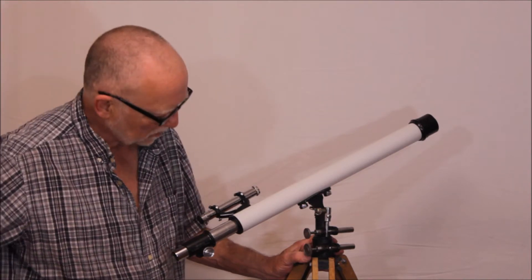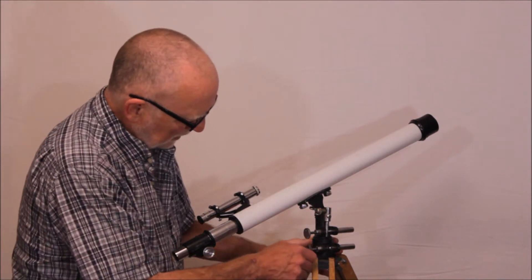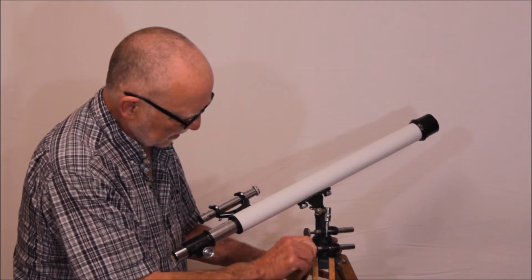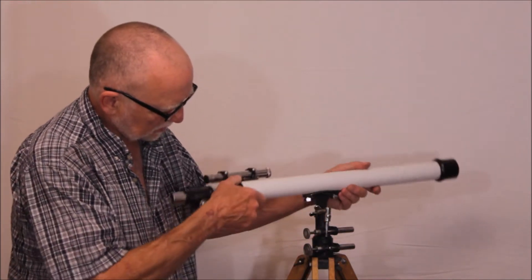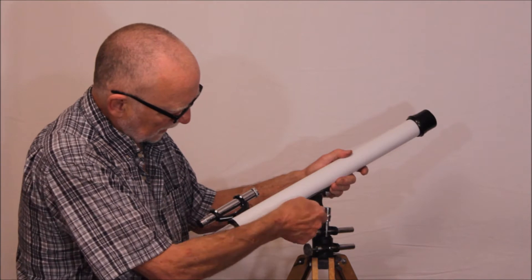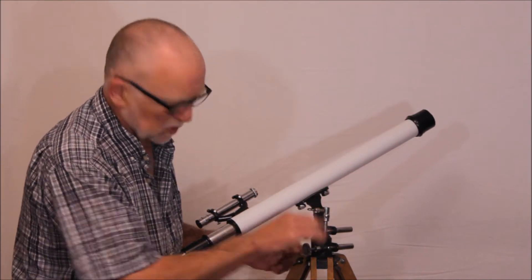One of the main limitations about this scope is this: the azimuth control. In the altitude, you have lots of freedom. You lock it down and you have slow motions. Beautiful. Very nice. But in azimuth,